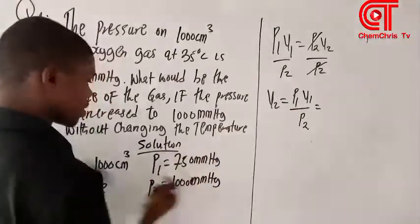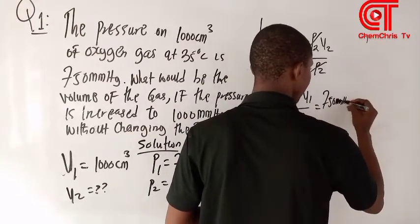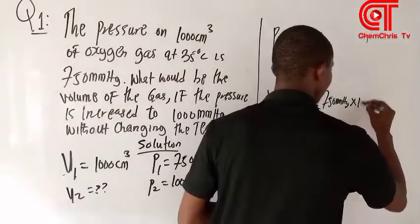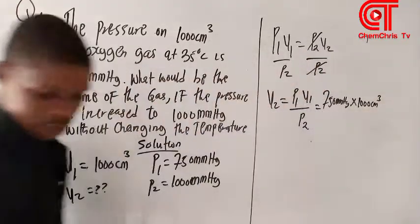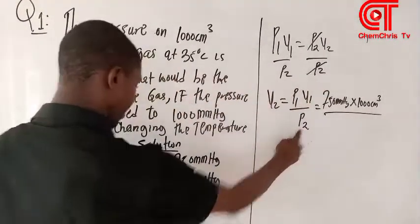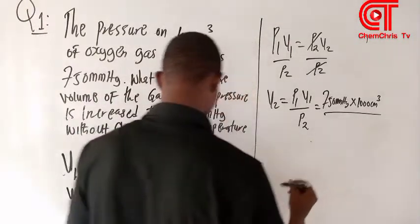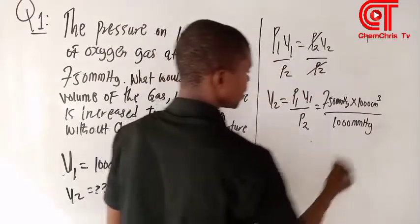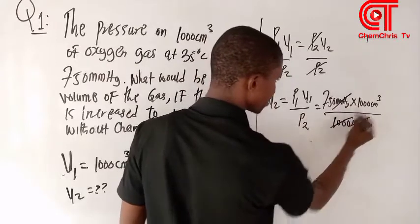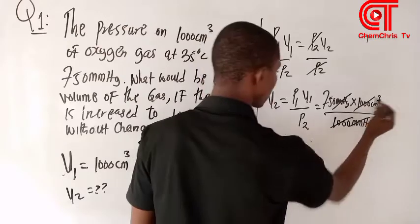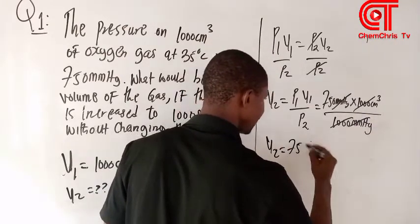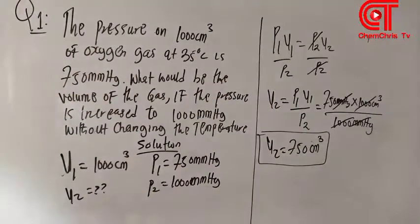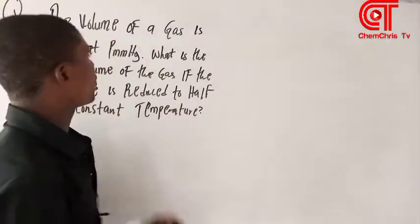Substituting the values: V₂ = (750 mmHg × 1000 cm³) ÷ 1000 mmHg. The 1000s cancel, giving V₂ = 750 cm³. So the answer is 750 cm³.